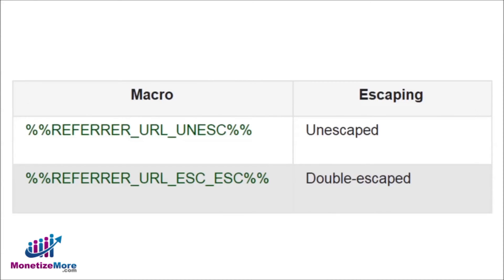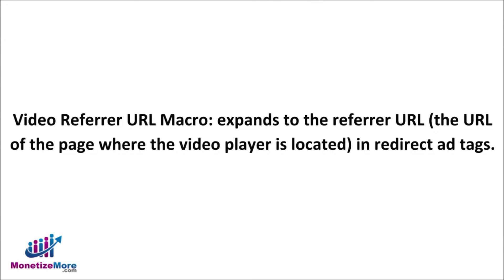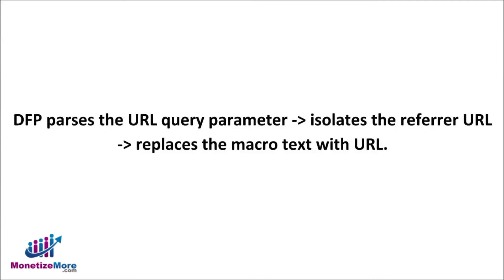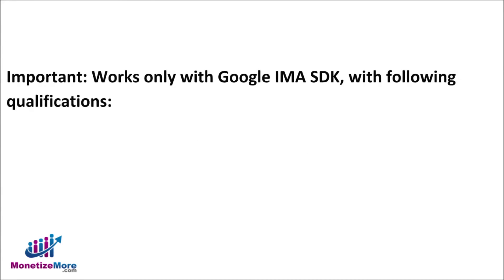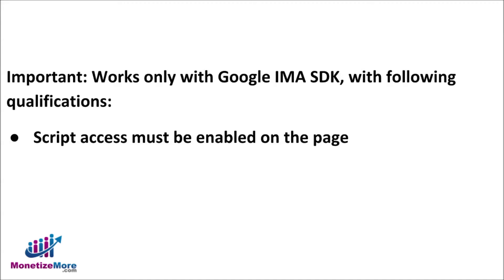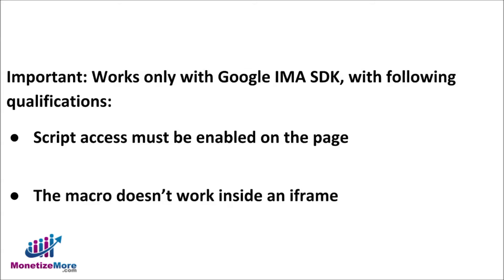The Video ReferURL Macro expands to the refer URL — the URL of the page where the video player is located — in redirect ad tags. DFP parses the ad tag's URL query parameter, isolates the refer URL, and replaces the macro text with that URL. It works only with the Google IMA SDK with the following qualifications: script access must be enabled on the page for this macro to work, and the macro doesn't work inside an iframe.